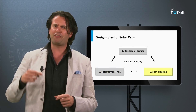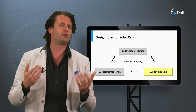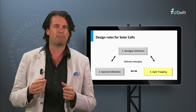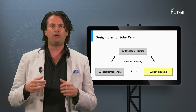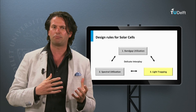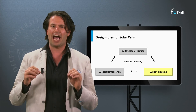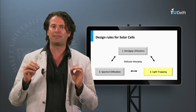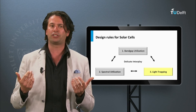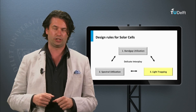Thirdly, if we have chosen our PV material, its potential utilization of the solar spectrum and its utilization of the bandgap energy, we would like to absorb as much light as possible from the solar spectrum in the PV active materials. We have to implement tricks to trap the light in the solar cell. This becomes an important issue if you consider thin-film PV technologies.